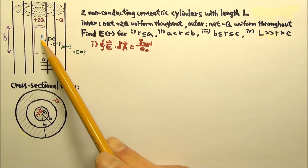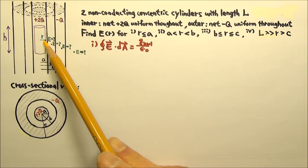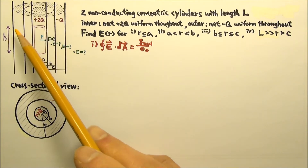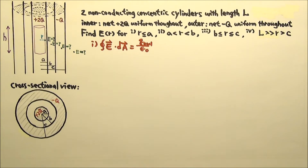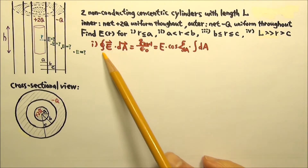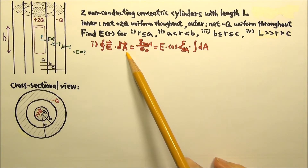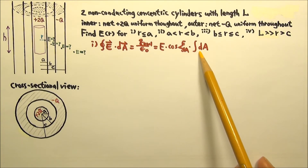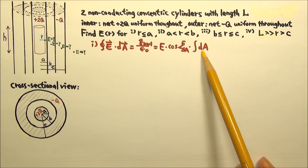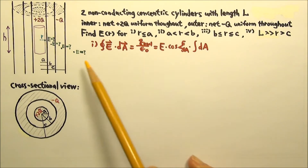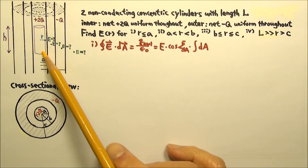Our Gaussian surface is a cylinder that goes through the location we're interested in, so it must have radius little r. The height of the cylinder can be anything we choose, so I'll make it height h. When we use Gauss's law to find the electric field, we don't want complicated integration, so we need to be able to take out E and cosine, leaving just the integral of dA. We only need to do that for the part of the Gaussian surface that has non-zero flux.